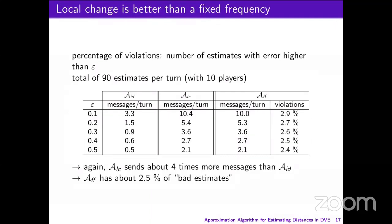To compare the algorithms in terms of maximal error, we look at the percentage of violations — that is, the number of estimates with a relative error higher than epsilon. Note that there are ten players, and each one of them has an estimate for each other player, so there is a total of 90 estimates per turn. As we have proven that with the ideal algorithm and LocalChange the maximal error is never overcome, the percentage of violations is always zero for them.